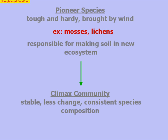It's also important to note that with primary succession, there is no soil initially — soil is absent. Pioneer species are the first organisms to take hold of the new community, and they are responsible for making the new soil. Pioneer species are very tough and hardy, and they are usually brought by the wind. Some examples are small plants like mosses. They take hold in cracks of the rocks and ultimately, over time, help build the soil in the new community.